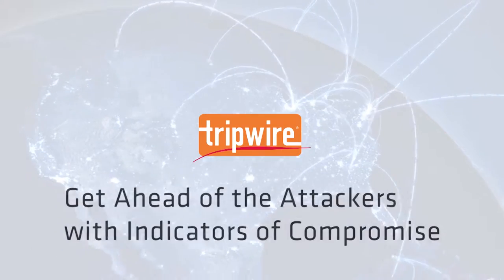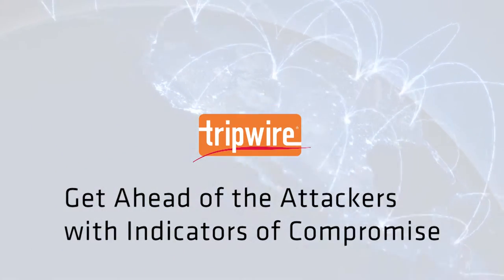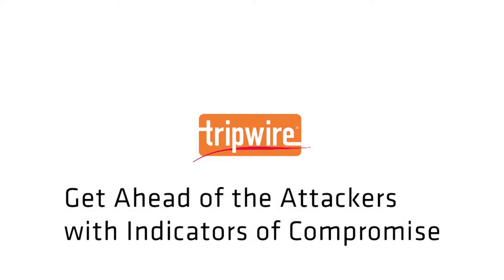Travis, how and why do I want to adopt indicators of compromise? So adopting indicators of compromise is going to give you a leg up on your adversary, on your attackers. It allows you to proactively understand not only the tools that your attackers are going to be using, but also their tactics and techniques.